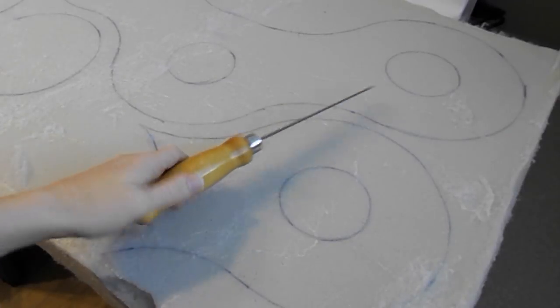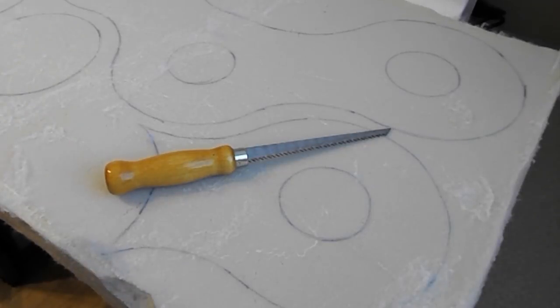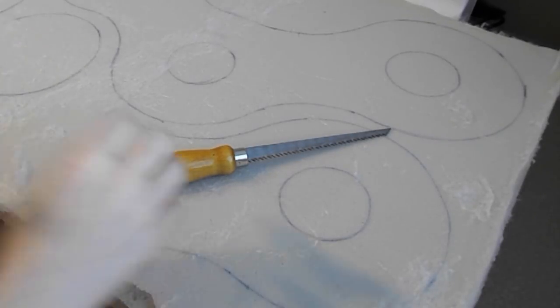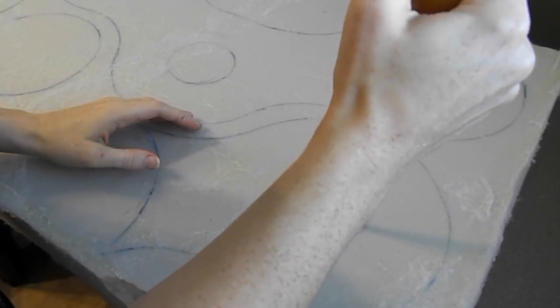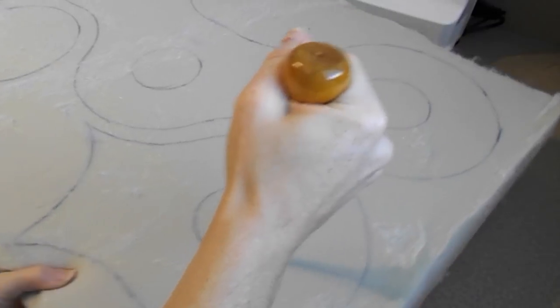After drawing out my pattern onto the foam it's time to cut it out. Now you can use whatever you have around the house that you're comfortable cutting the foam with but what I'm using to cut my foam is pretty much a drywall cutter. It's not very sharp but it's serrated enough to where it'll cut the foam very nicely.